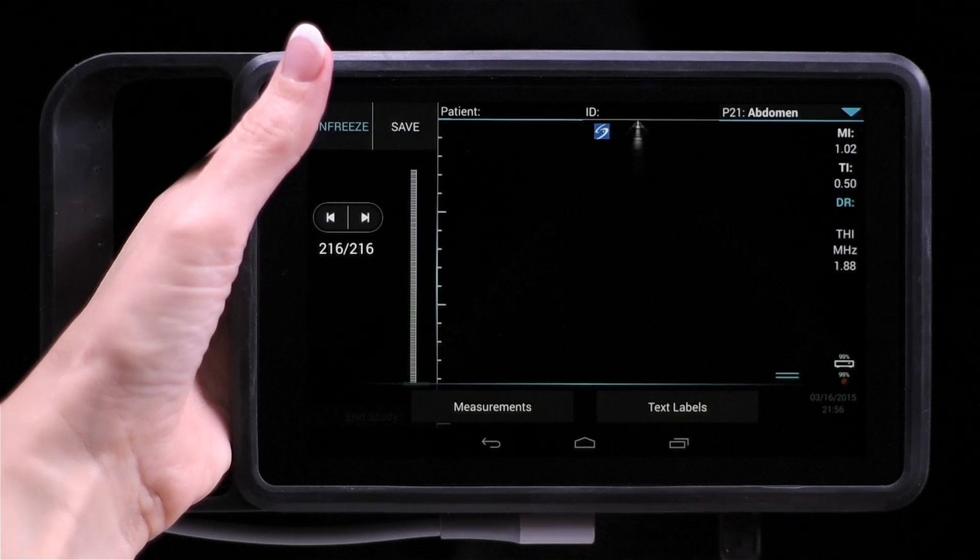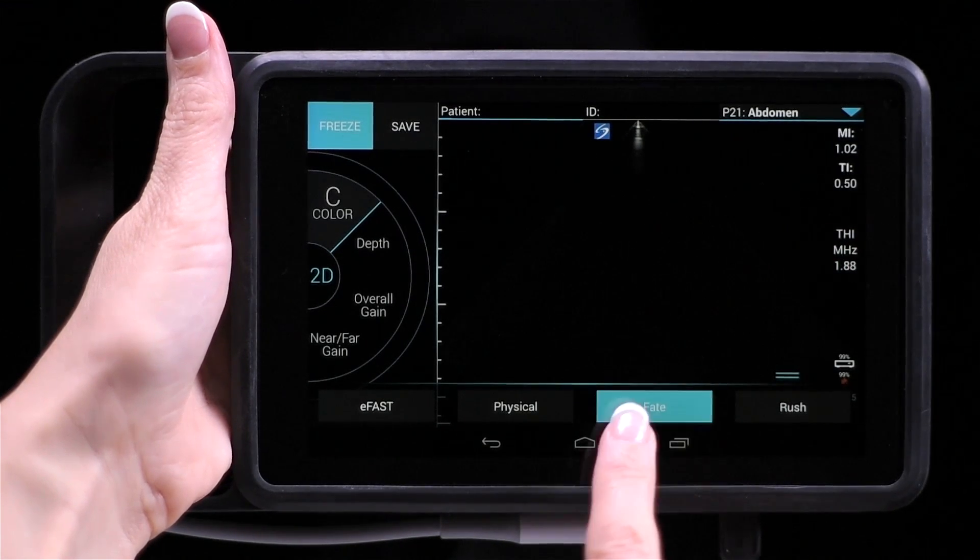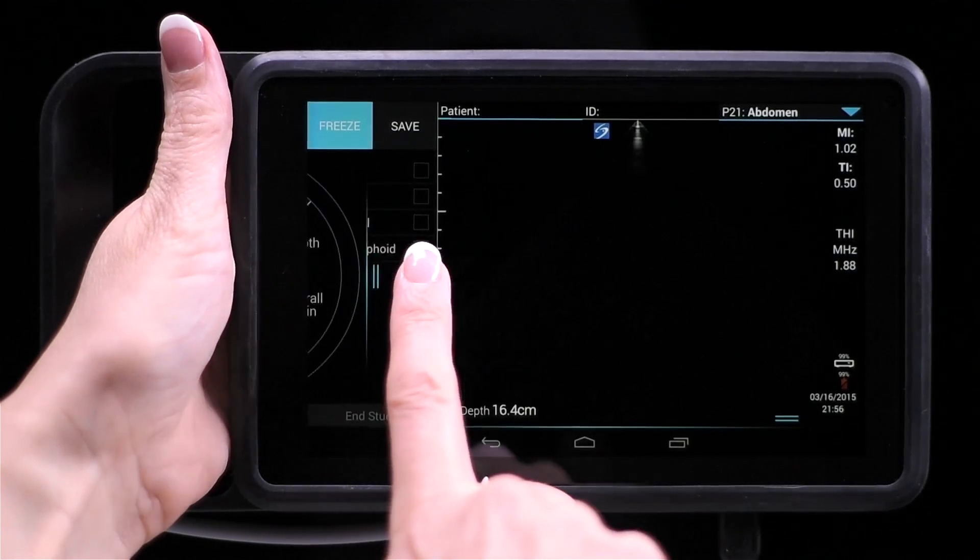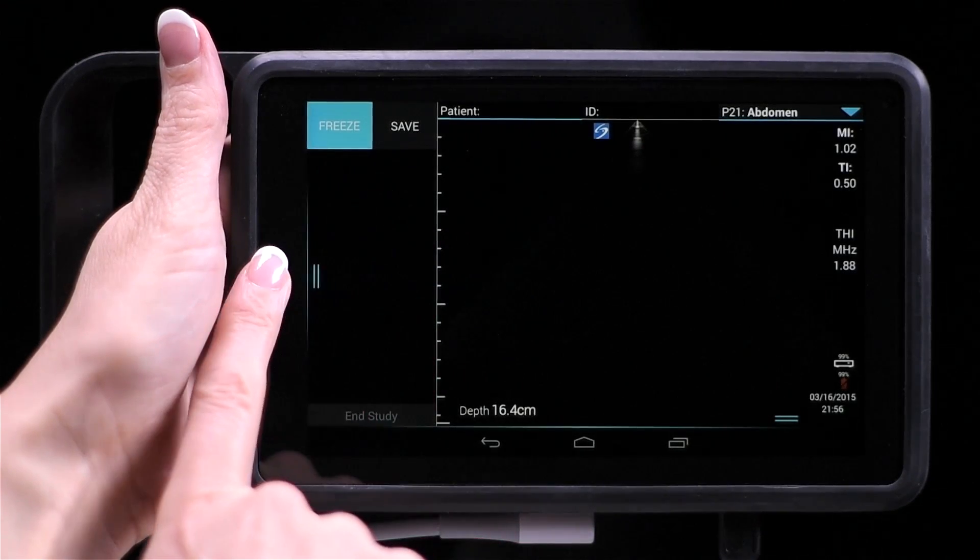While viewing a guided protocol in Live Scan mode, you can pull out the wheel and change different options, such as depth or gain. Then slide the wheel back in to continue.